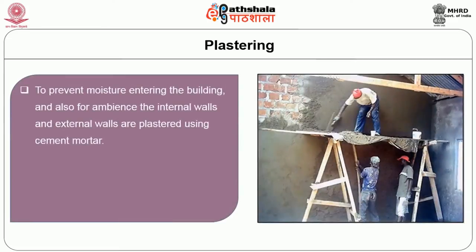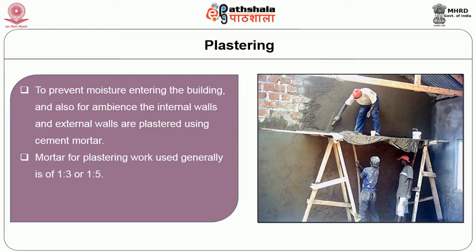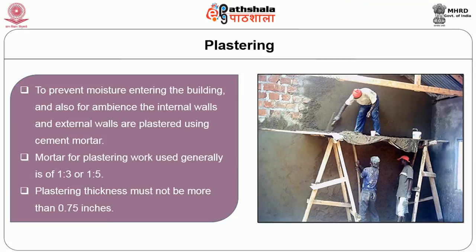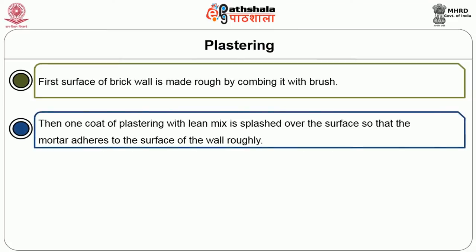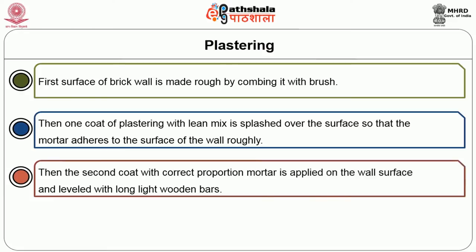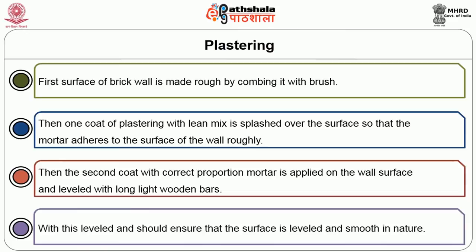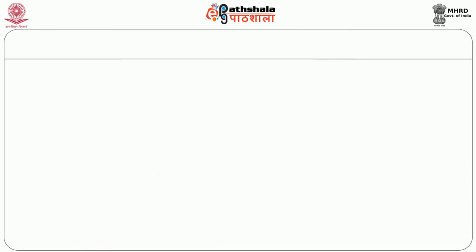Level 6 is plastering. Generally, to prevent moisture entering the building and also for ambience, the internal and external walls are plastered using cement mortar. Mortar for plastering work is generally 1:3 or 1:5. Plastering thickness must not be more than 0.75 inches. While plastering it must be noted that the cement mortar is neither too stiff nor too lean, because the consistency of mortar influences its strength. First, the surface of the brick wall is made rough by combing it with a brush, then one coat of plastering with lean mix is splashed over the surface so that the mortar adheres roughly to the wall surface. Then a second coat with correct proportion mortar is applied and leveled with a strong light wooden bar, ensuring the surface is leveled and smooth.